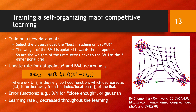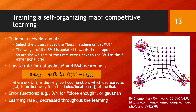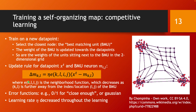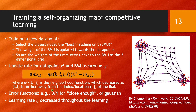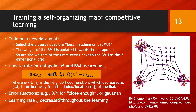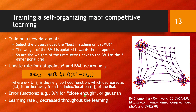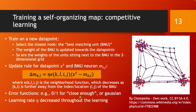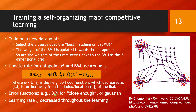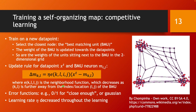The question is what to choose for the neighborhood function. One standard option is a binary 0/1 function: you set a threshold for what counts as close enough — units within that threshold get a value of 1 and are updated, while those outside get 0 and are not updated.